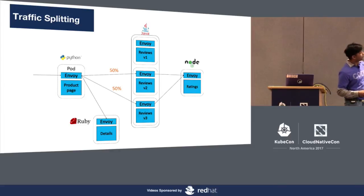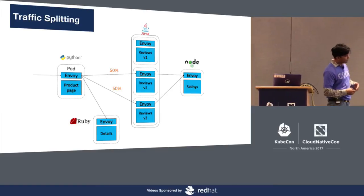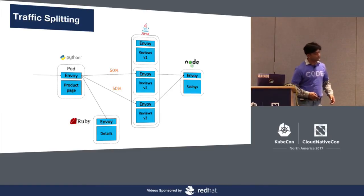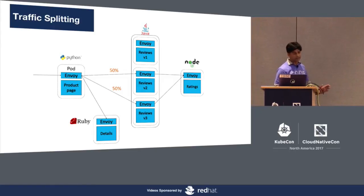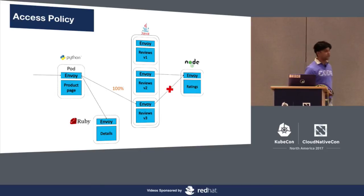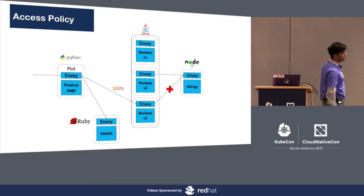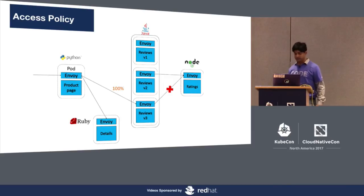Book Info gives you a product page with book details, a reviews microservice with three versions showing reviews of the book, and a ratings microservice showing star ratings. In this case we show splitting traffic 50-50 across version 2 and 3 with nothing going to version 1. Similarly, if a particular user is coming in, we can select where to redirect them. We can also limit access to a particular destination microservice — for example, specifying that reviews version 3 cannot talk to the ratings microservice.